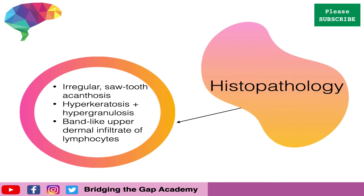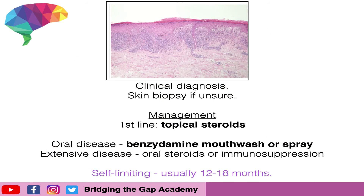Regarding the histopathology of lichen planus, the classic finding seen in exams is an irregular sawtooth acanthosis. We will also see hyperkeratosis and hypergranulosis in this disease. There will also be a band-like upper dermal infiltrate of lymphocytes. On direct immunofluorescence, IgM antibodies can be seen.